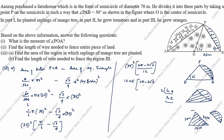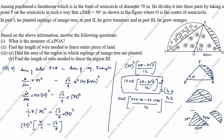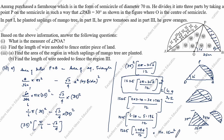Continuing the calculation: (1225 × 1.084) / 12 equals approximately 110.65 square meters. So the area of the mango region is approximately 110.65 m².